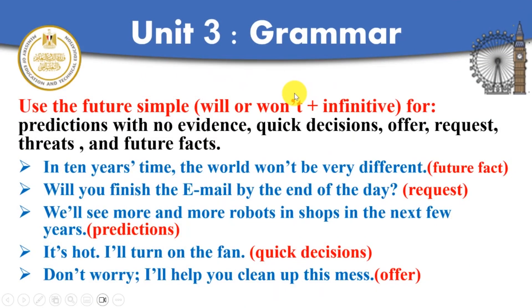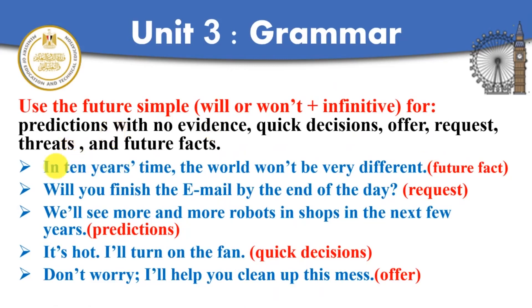Will do or won't do. Will take or won't take. We use the future simple for predictions with no evidence. Remember this. We use it for quick decisions, offers, requests, threats, and future facts. And of course, we can use it for promises as well. For example: in 10 years time, the world won't be very different. Here I'm talking about a future fact.